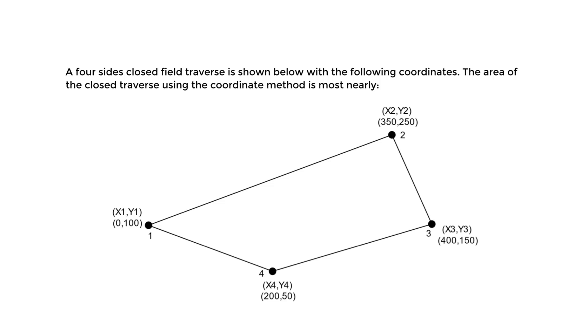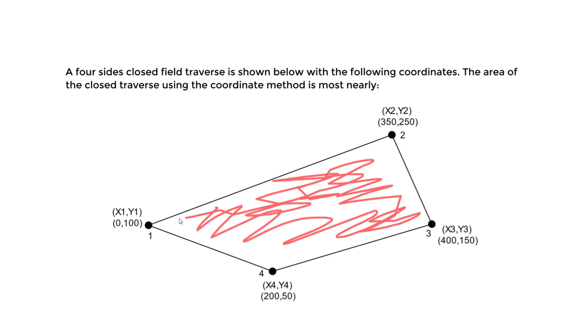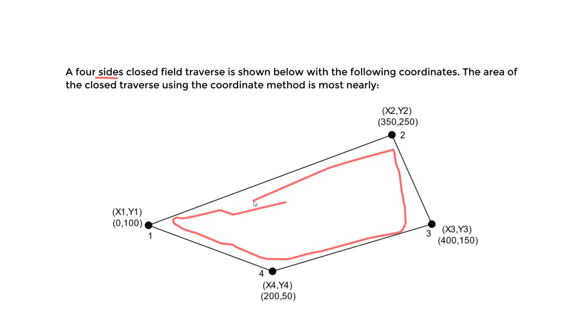Now let's do a surveying example. We will use the coordinate method to find the area of a closed traverse. So we're finding essentially this entire area here of this closed traverse. We have a four-sided closed field traverse shown below with the following coordinates. We start at point 1, this is point 2, point 3, point 4, then we end at 1.